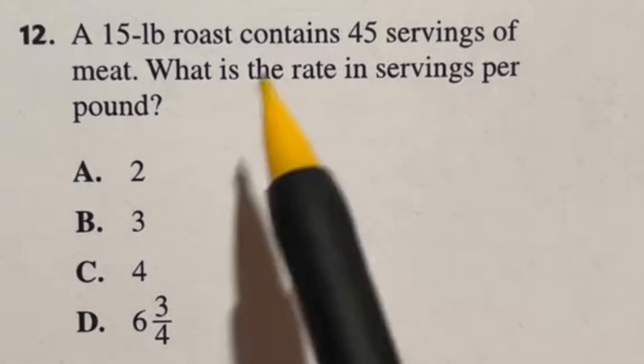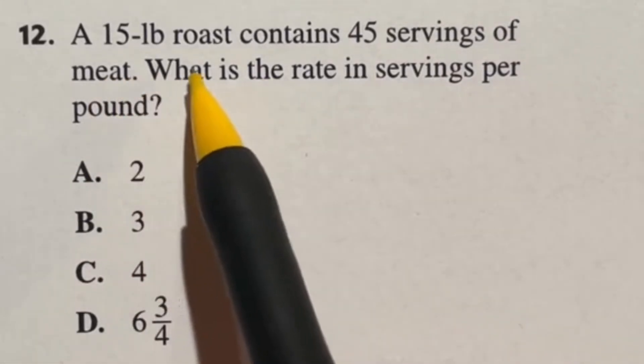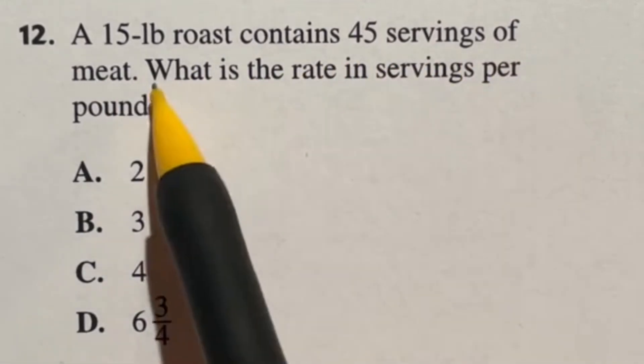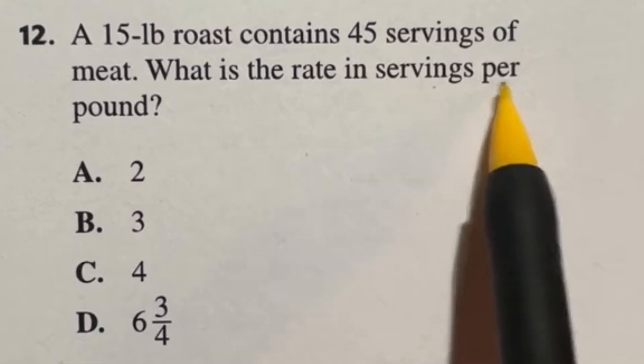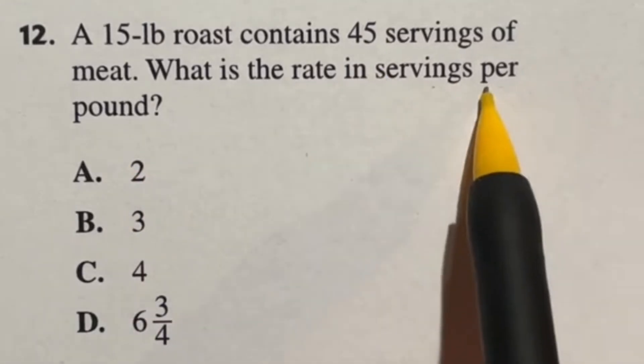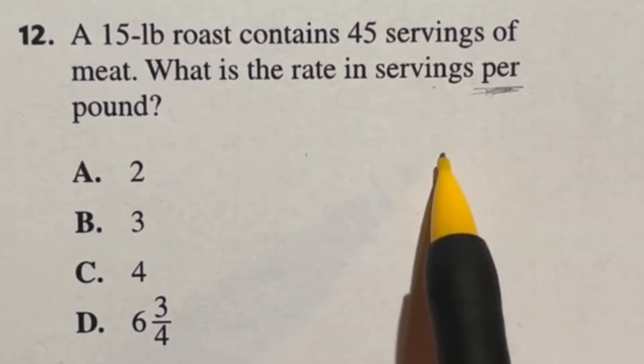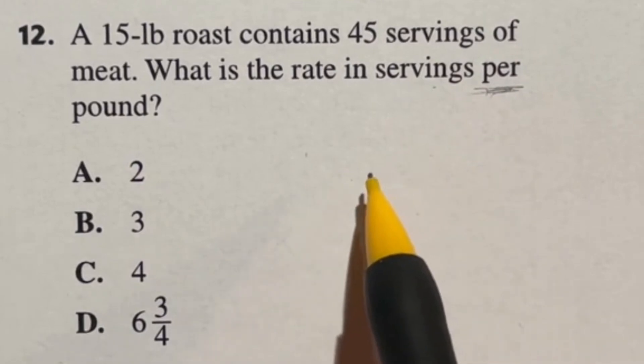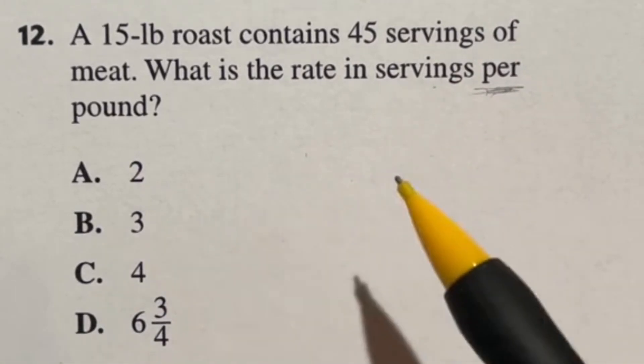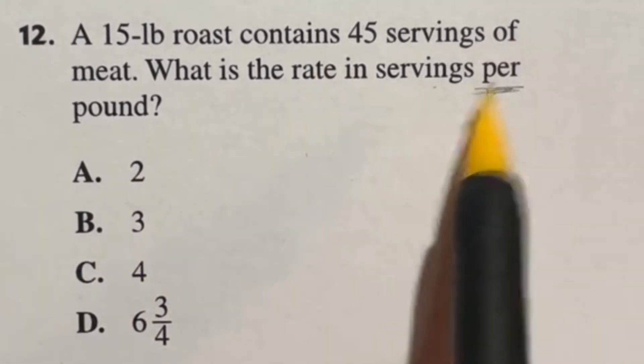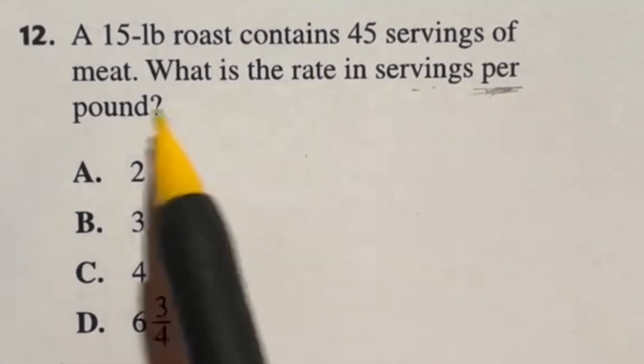Sometimes these questions are just a little too easy. It says here for number 12, a 15 pound roast contains 45 servings of meat. What is the rate in servings per pound? Well, we've talked over and over about the fact that this word per is usually your good idea that this is a division problem. So in this case, they want to know servings per pound.